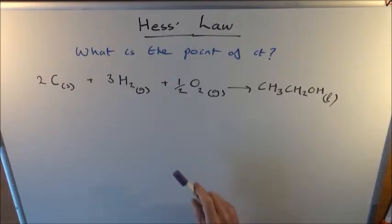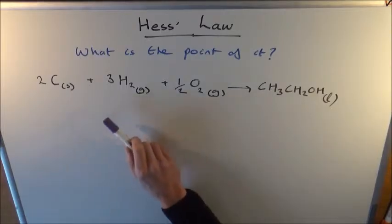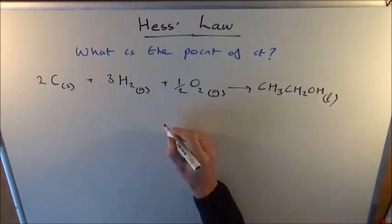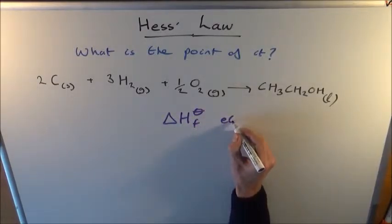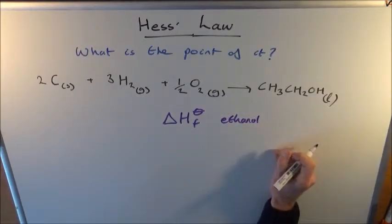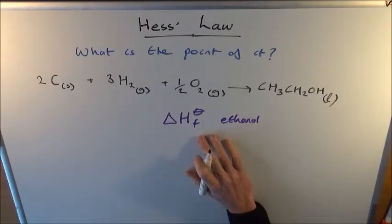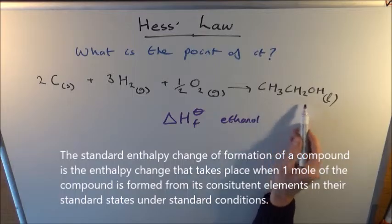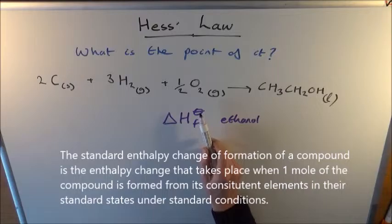Here I have written the equation showing the formation of ethanol from its constituent elements. This equation represents the enthalpy change of formation of ethanol. Always check the definitions in your own textbook or with your own specification for your exam board. The definition for the enthalpy change of formation is the enthalpy change that takes place when one mole of a substance is formed from its constituent elements with everything in its standard state.